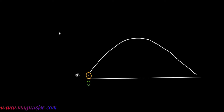The projectile traverses the parabolic trajectory and strikes the ground again at point B. The horizontal can be denoted by the straight line OX. The projectile is thrown with initial velocity U from the ground at an angle theta with the ground.